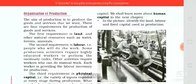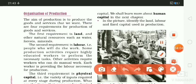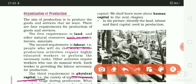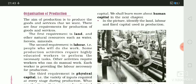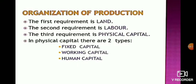Now let's discuss the organization of production. The first requirement for production is land, the second is labor, and the third is physical capital. In physical capital there are two types: fixed capital and working capital. Human capital is also added here.